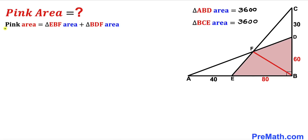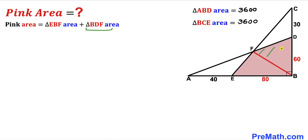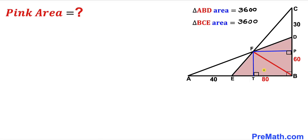In the next step, I've connected point B and F. We can observe that the pink shaded region area equals the area of triangle EBF plus the area of triangle BDF. So our task now is to calculate the area of triangle EBF and the area of triangle BDF.